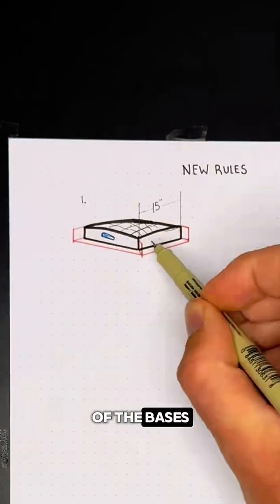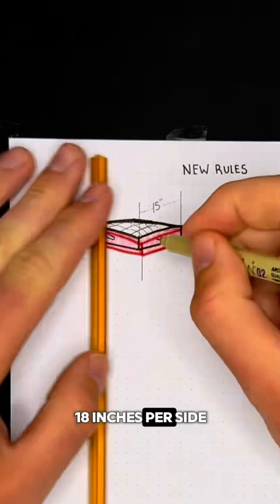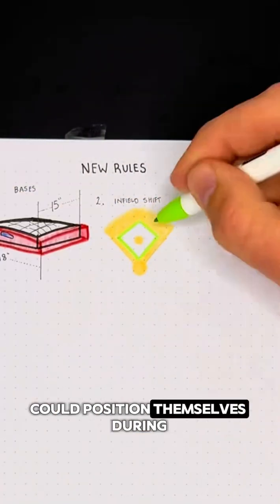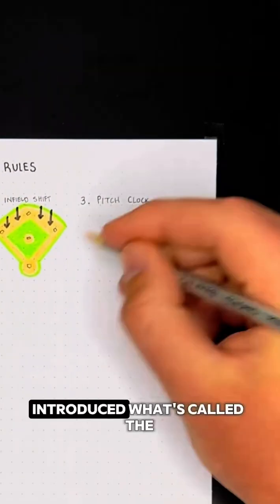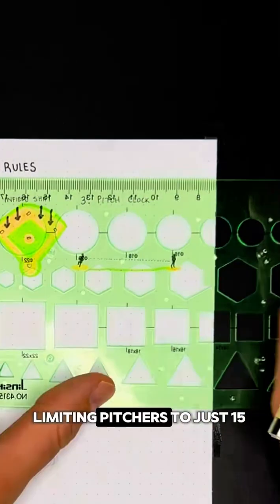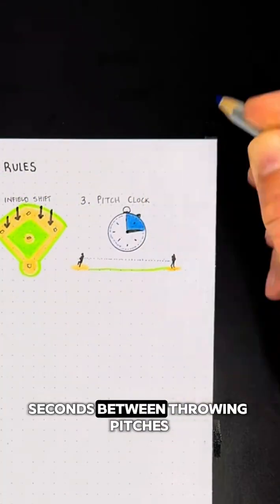They increased the size of the bases from 15 inches to 18 inches per side, added restrictions on where infielders could position themselves during a pitch, and most importantly, introduced what's called the pitch clock, limiting pitchers to just 15 seconds between throwing pitches.